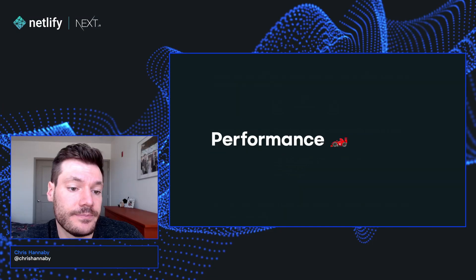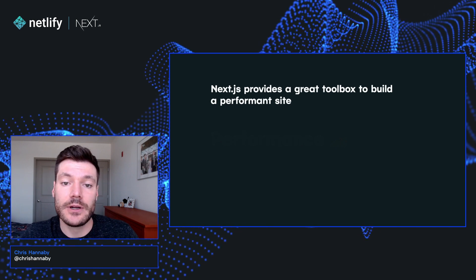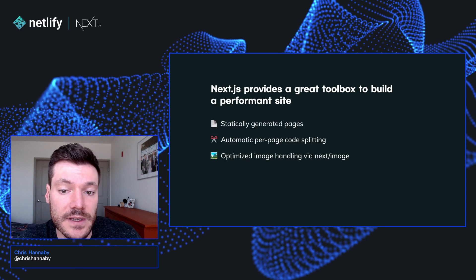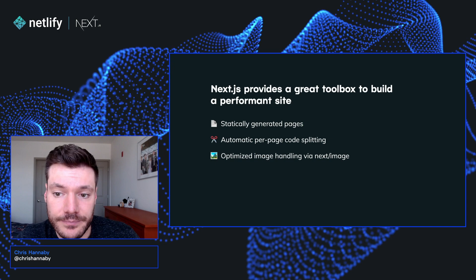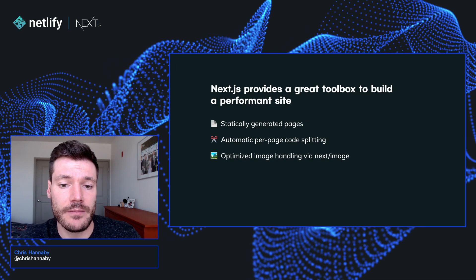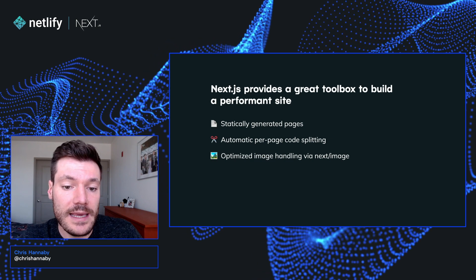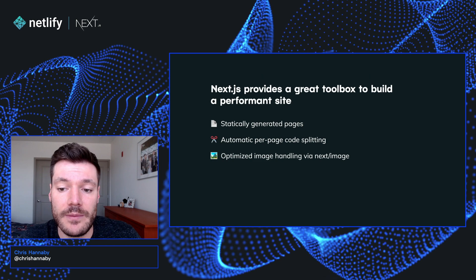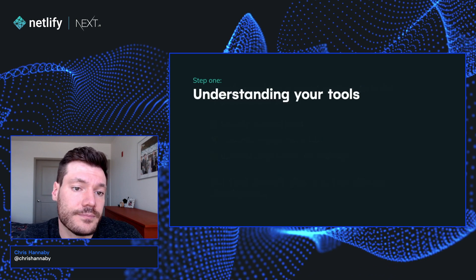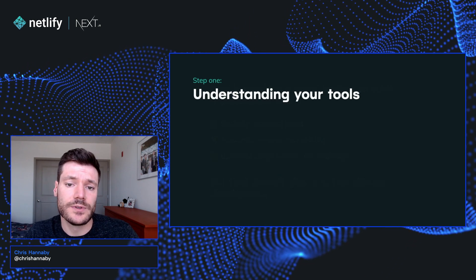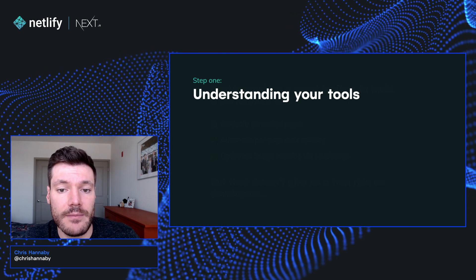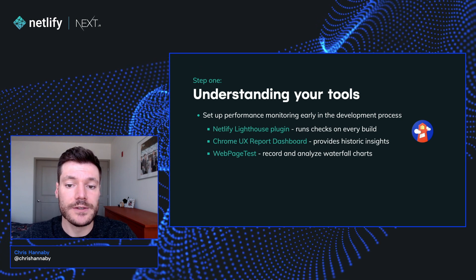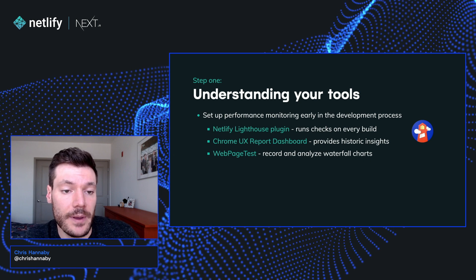We'll end today with some notes on performance. By using Next.js, you get access to a great toolbox that can be used to build a very performant site. For example, Next.js gives us the ability to statically generate pages, as we've seen today. We also get automatic per-page code splitting, so when we load a page, the browser will only load the JavaScript required for that particular page. And by using the Next.image component, we get easy access to a range of image handling best practices. But these things don't mean that we can completely forget about performance. The first step is to understand our tools, including Next.js itself, but also any other libraries that we may import and other third-party services that we're using at runtime. It's always a great idea to set up performance monitoring early in your development process, so you can really start to understand how the changes you're making as a developer are impacting key metrics.